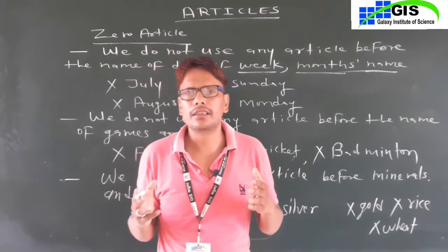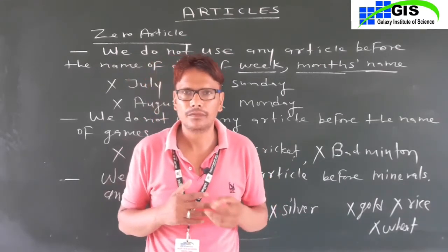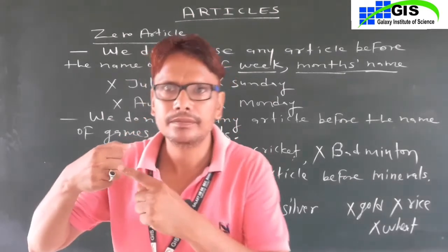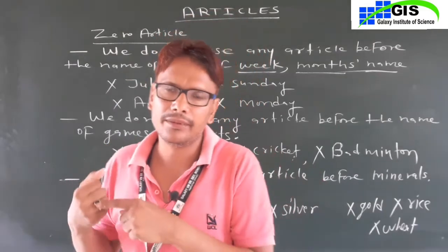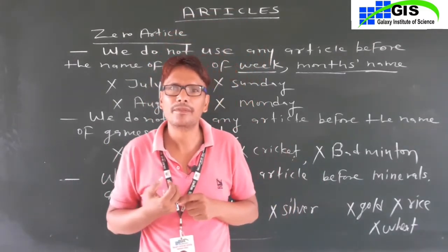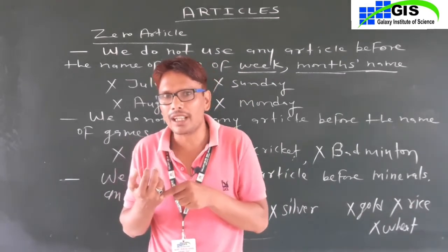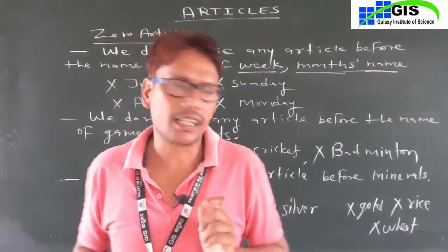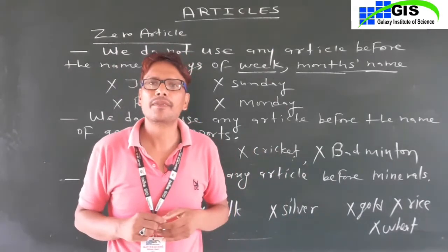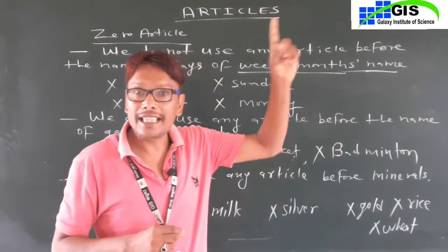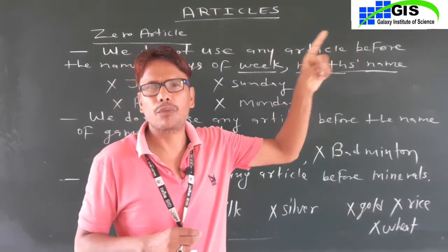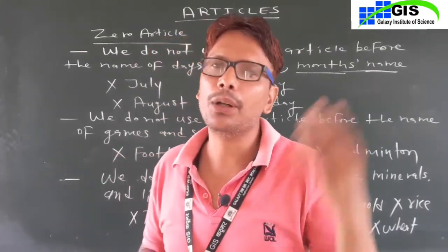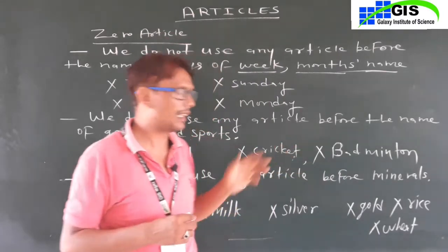Sona ek mulyavan dhatu hoti hai (Gold is a precious metal). But if I say 'The gold in your ring is very beautiful' — that gold refers to something specific. Similarly, we do not use an article before rice, but 'The rice grown in Punjab is very precious' — here we use 'the' because it refers to specific rice.